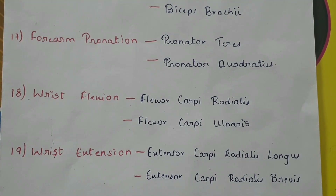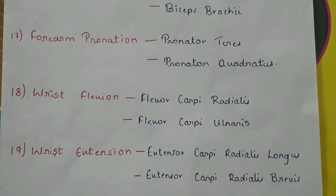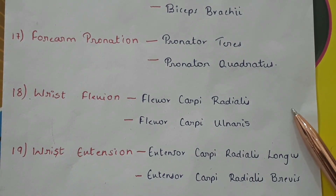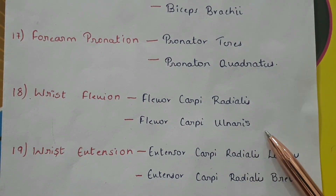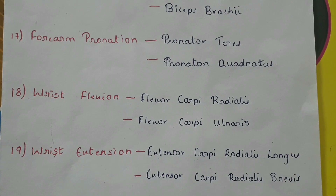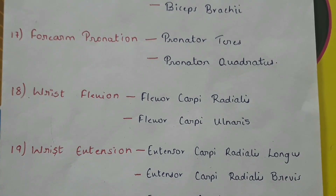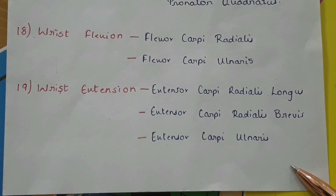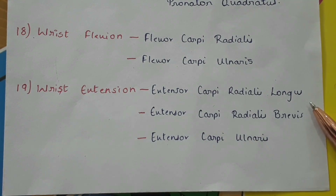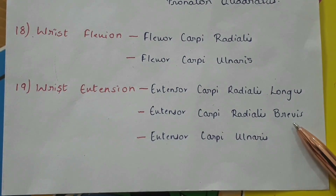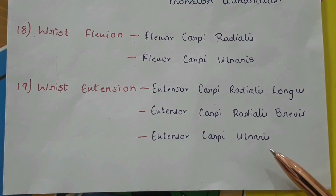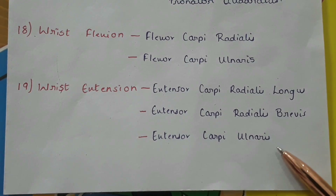Wrist flexion by flexor carpi radialis on the radial side and flexor carpi ulnaris on the ulnar side. Wrist extension by the extensor carpi radialis longus, extensor carpi radialis brevis, and the extensor carpi ulnaris.